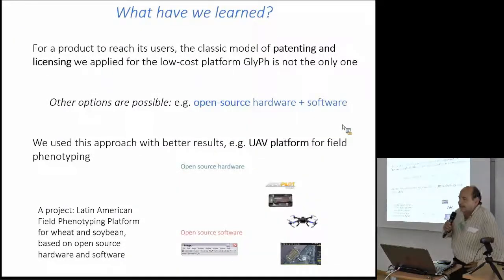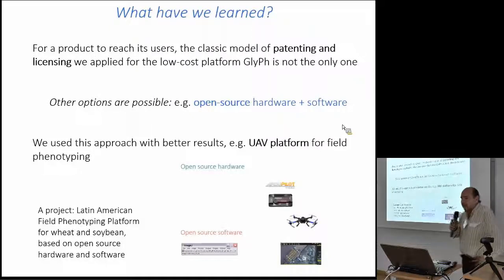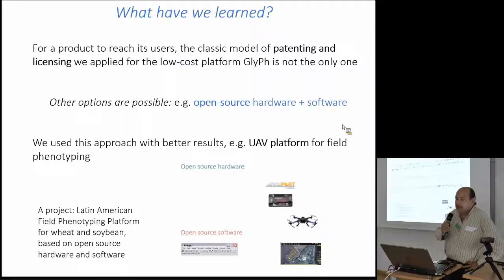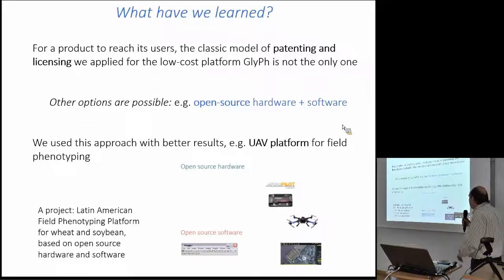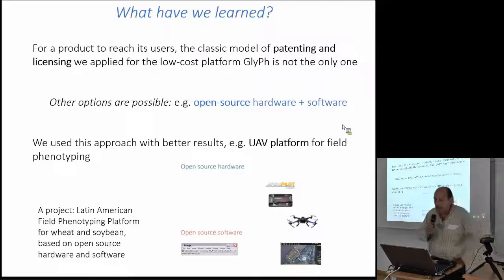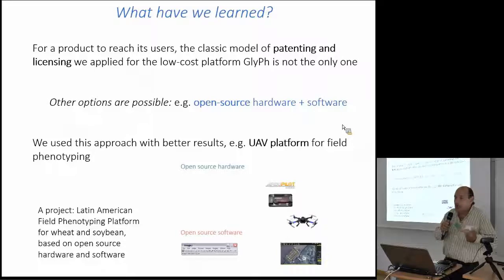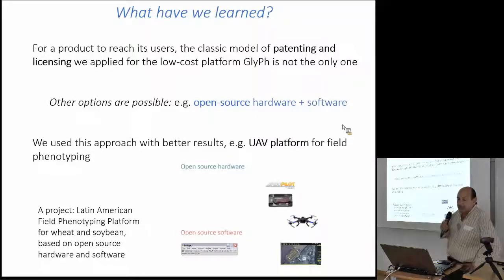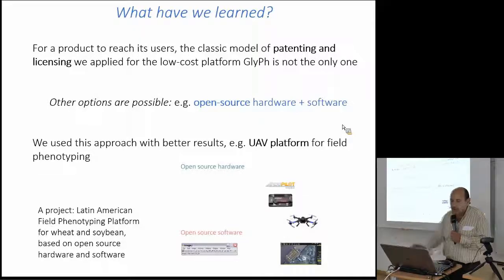We also learned that the classic model we applied for the low-cost Glyph platform — patenting and licensing — is not the only one. Using open source hardware or software is another possibility, and we used this approach with better results. For instance, to develop a UAV platform for field phenotyping of wheat and soybean, based on open source hardware and software for Latin America.